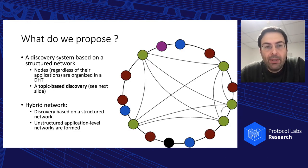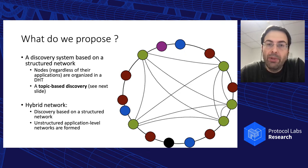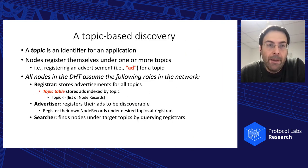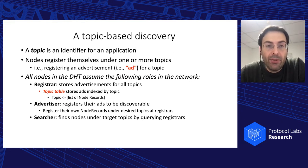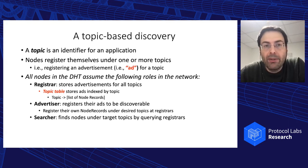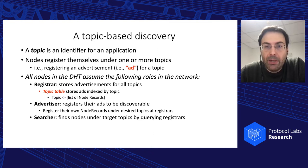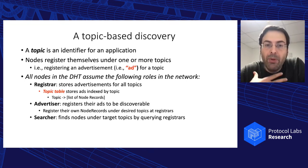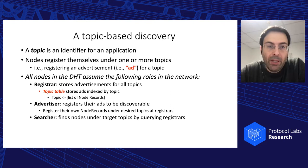What we propose instead is a topic-based discovery. We have a DHT, but unlike the previous approach where we didn't take advantage of the DHT structure, here we do. To be discoverable, a node must register itself with other nodes — this is called registering an advertisement or ad. Nodes advertise themselves under specific topics, where a topic is a pseudonym for an application. All nodes must assume the following roles: as a registrar, you store advertisements for all topics in the network in a topic table indexed by topic as a list of node records.